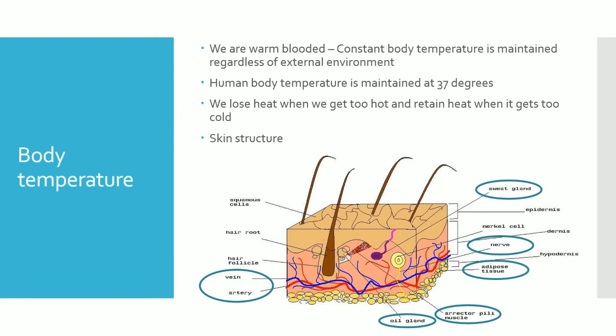We are warm-blooded, which means constant body temperatures are maintained regardless of the external environment, and the human body temperature is maintained at 37 degrees. We lose heat when it gets too hot and retain heat when it gets too cold — that is the basic mechanism of homeostasis.